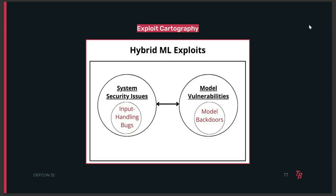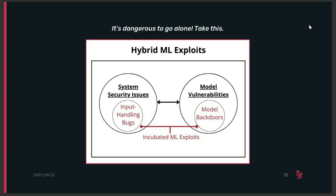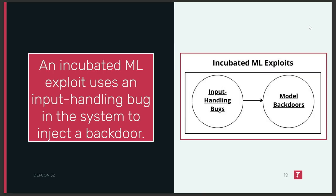One kind of system security issue is an input handling bug, and one kind of model vulnerability is a model backdoor. Put that together and we get an incubated ML exploit, which is a type of hybrid ML exploit where an attacker uses an input handling bug to inject a backdoor. I made this diagram to make the distinction between the two pretty clear. We also ended up going into a more formal model of exploitation, including an exploit schema, but we'll return to that later.